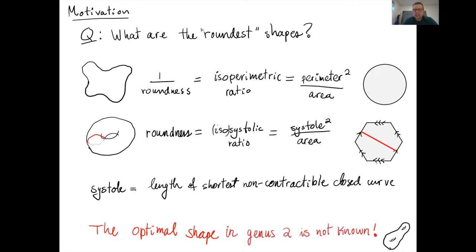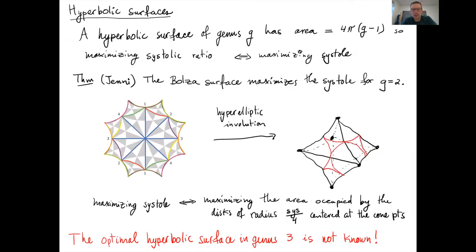Already in genus two, we don't know which Riemannian metric maximizes the systolic ratio. So maybe this problem is too hard — how can we make it easier? We can restrict the class of Riemannian metrics that we look at. Since I like hyperbolic geometry, it's natural to restrict to hyperbolic surfaces. If you have a surface of constant curvature minus one, then by the Gauss-Bonnet formula, the area is normalized to be 4π times (genus minus one), so maximizing the systolic ratio is really just the same as maximizing the systole.